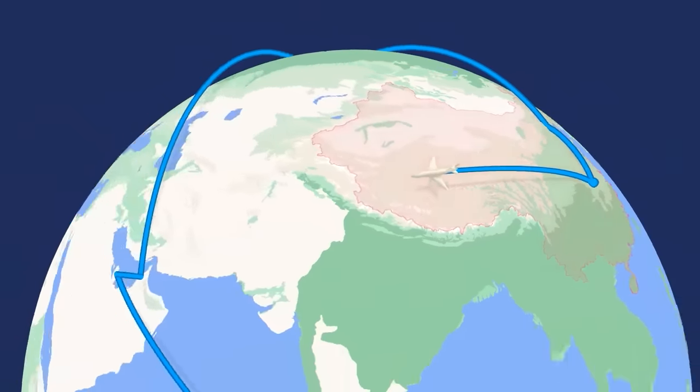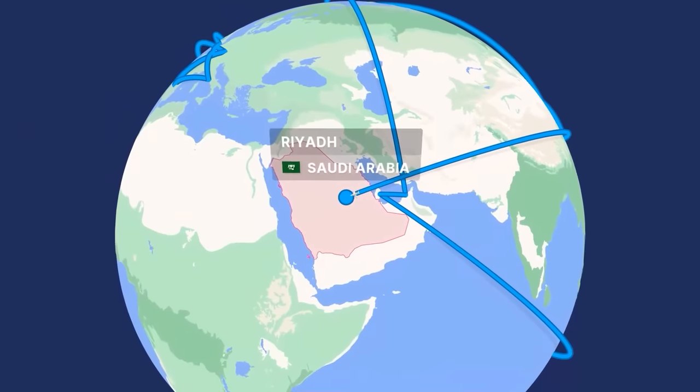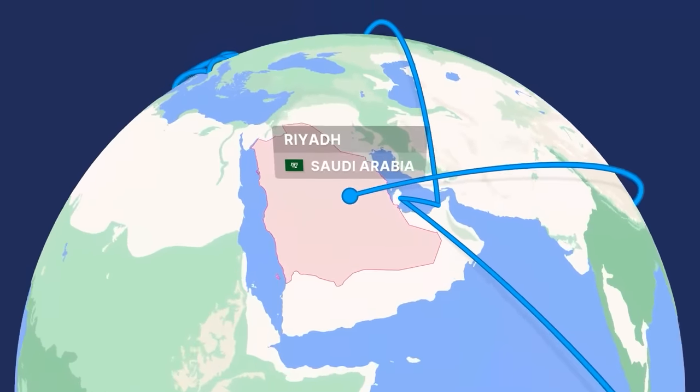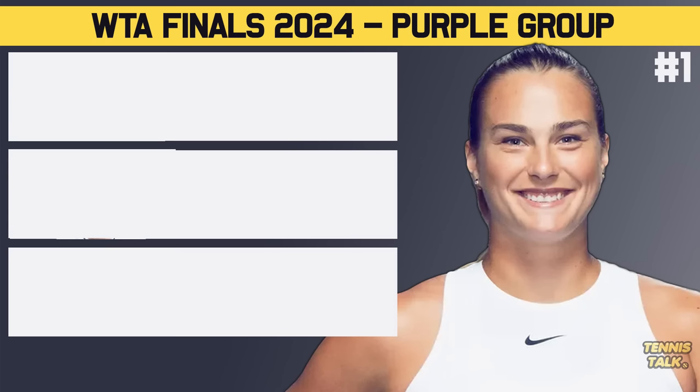All right, so the WTA Finals draw and the groups in the draw ceremony have just been decided. It's a very interesting couple of groups. Let's go have a look at who's in what group and also what the head-to-head is against each player in their selected groups. So the purple and the orange group.